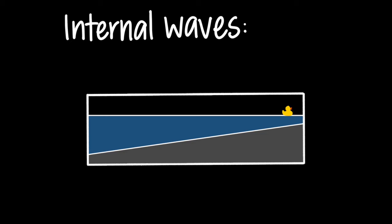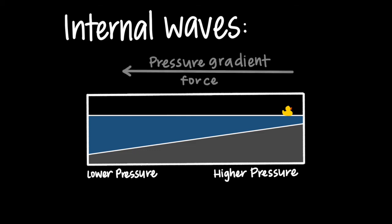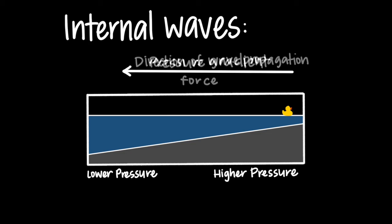Well, if we consider the right side of the tank first, it contains more dense water, which is associated with a higher pressure. On the other hand, the left side of the tank has more of the lighter layer of fluid, which is associated with a lower pressure. This creates a pressure gradient force moving from right to left, and thus induces the direction of wave propagation from right to left.